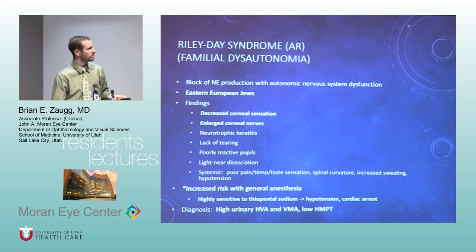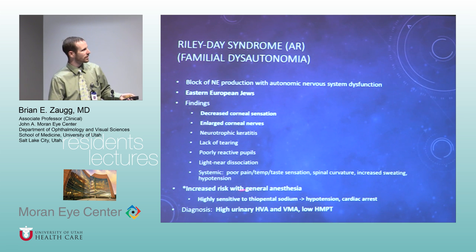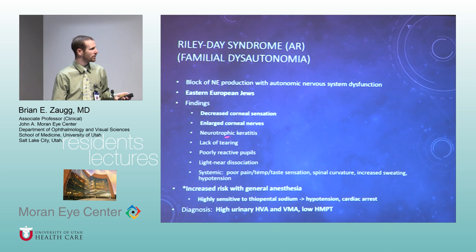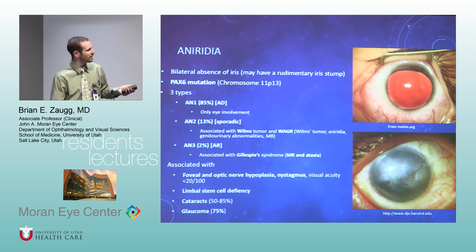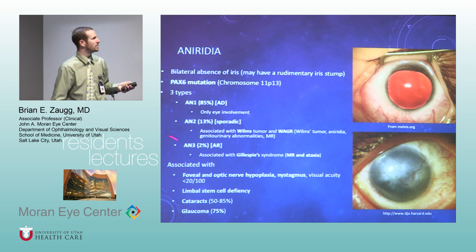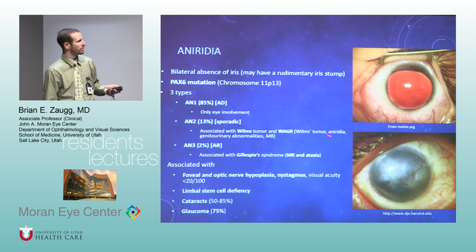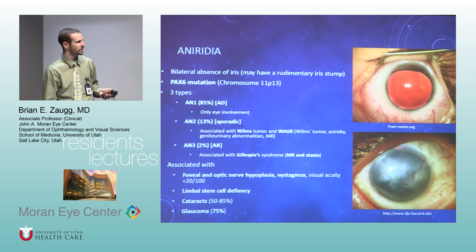Riley-Day syndrome: decreased corneal sensation leading to neurotrophic keratitis. Aniridia is a PAX-6 mutation — watch out for Wilms tumor in the sporadic kind. Lots of other things come with it, and they're usually not seeing well, plus stem cell deficiency, which is the thing we battle the most.